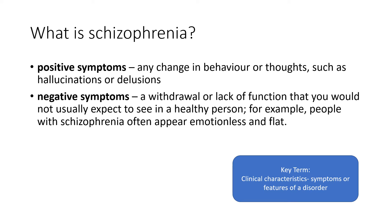The first thing we need to do is understand what schizophrenia is. It's a mental condition that is talked about quite a lot, but there are lots of symptoms that get mixed up with schizophrenia. You need to be sure you can confidently say what some of the symptoms are so you don't get muddled up with different mental illnesses. These are the clinical characteristics — the characteristics a doctor will use to diagnose you. There are two types of symptoms for schizophrenia.